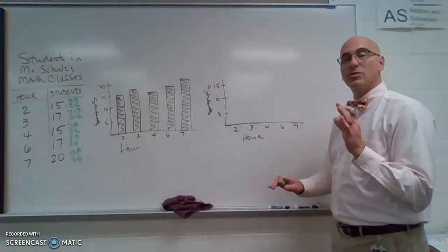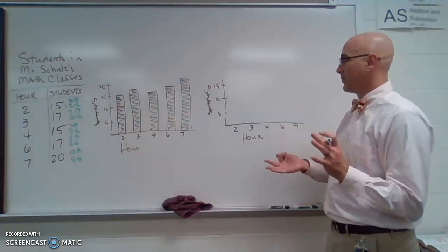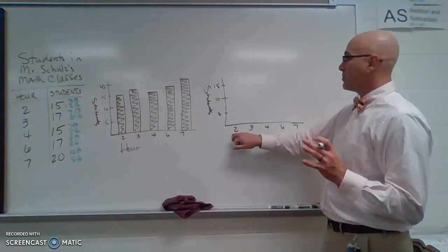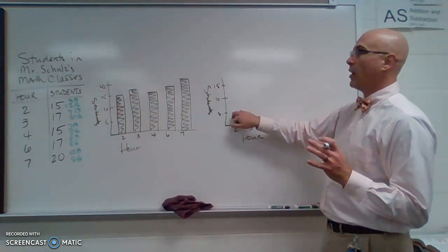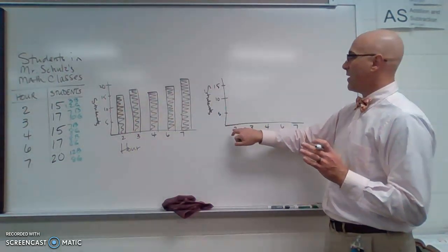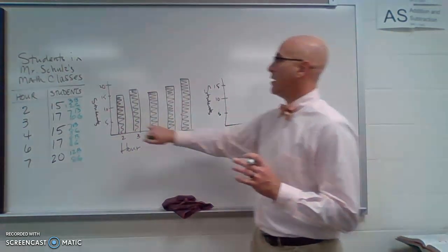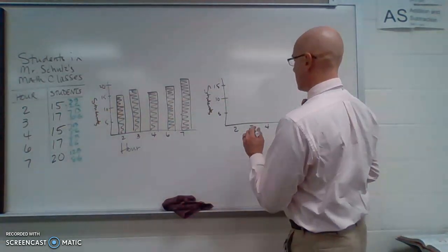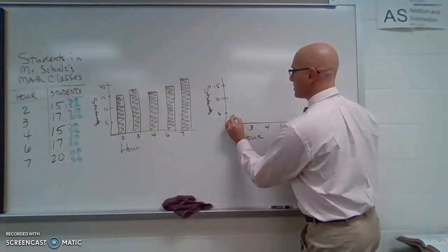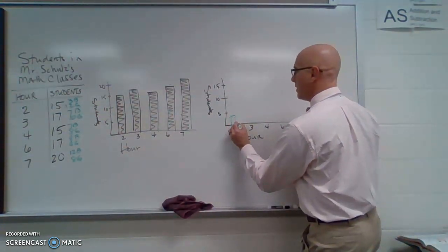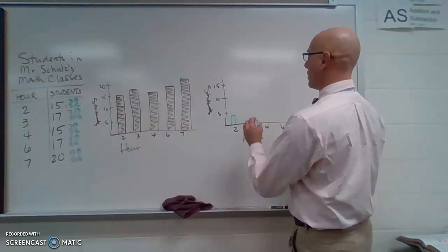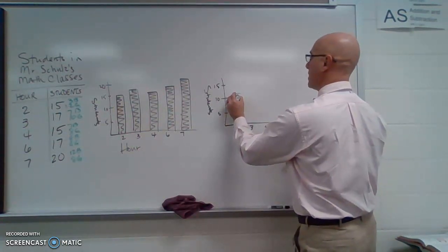So I am going to create another bar graph using that new data, and I am going to represent it in different ways. So I am going to have at each period two bars, one representing boys, one representing girls. So if I look at second hour, I have 3 boys. So 3 is about up to here, and then I have 12 girls. 12 is about up to here.